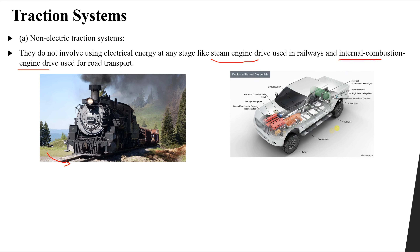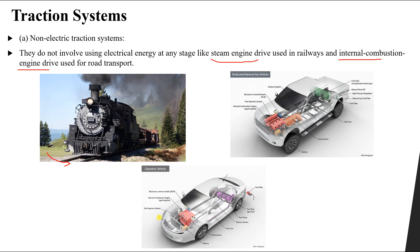The second type is the internal combustion engine drive. This is used in cars that run on natural gas or gasoline. The internal combustion engine uses gasoline or natural gas to produce small explosions inside the engine itself, which drive the car and provide mechanical power. This type also does not involve any type of electricity.